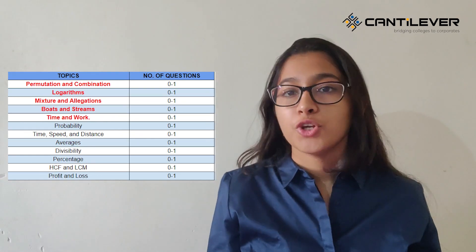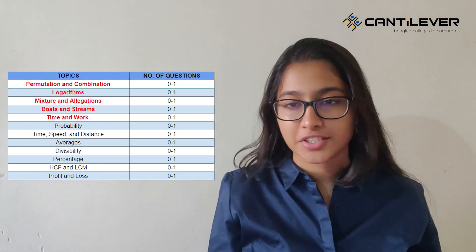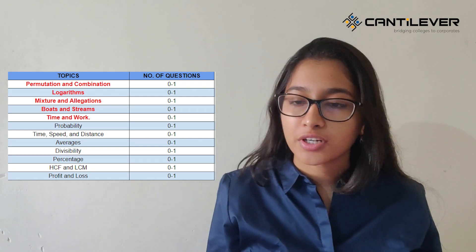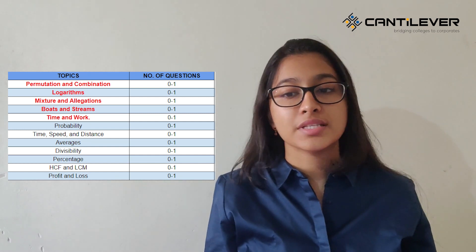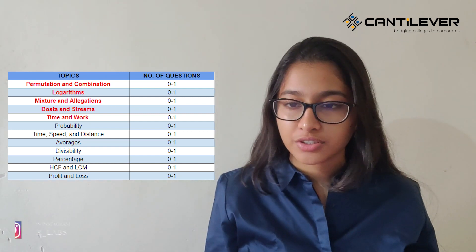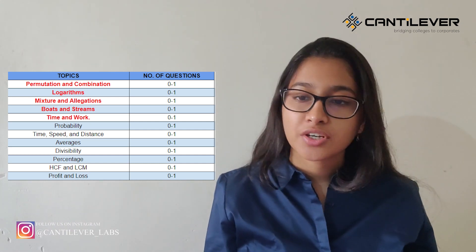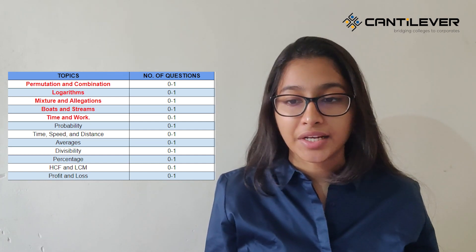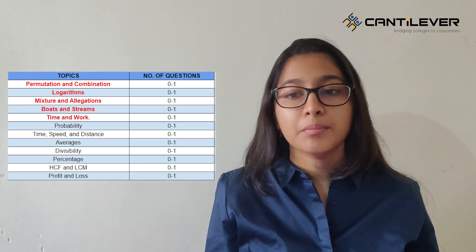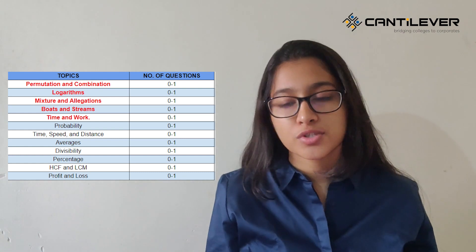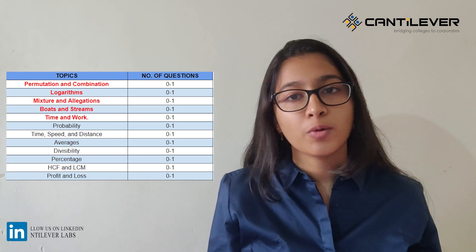As promised earlier, let's take a look at the 5 most important quantitative topics for Goldman Sachs. As you can see on the screen, you will have approximately 0 to 1 questions on all of these topics, and the most important ones are highlighted in red. The 5 most important ones are permutation and combination, logarithms, mixtures and allegations, boats and streams, and finally time and work. The other topics displayed on the screen are also important, but these highlighted in red are the most critical ones, so kindly don't miss out on them.